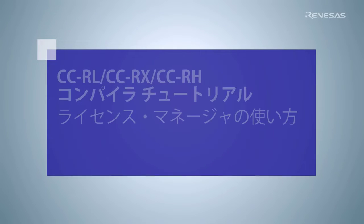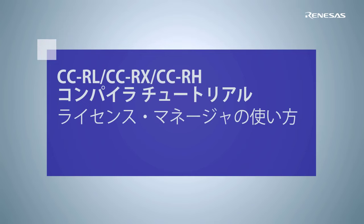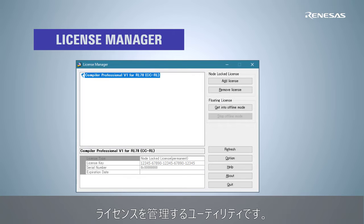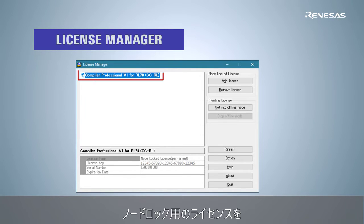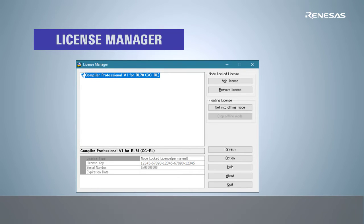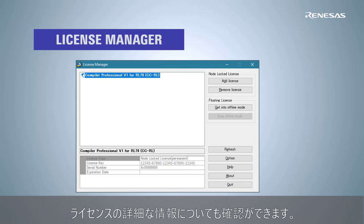Learn the basics of using the Renesis License Manager. The License Manager is a utility that manages licenses for Renesis C compilers. It is used to register or delete the node-locked license on your PC. You can also find detailed information of the license.